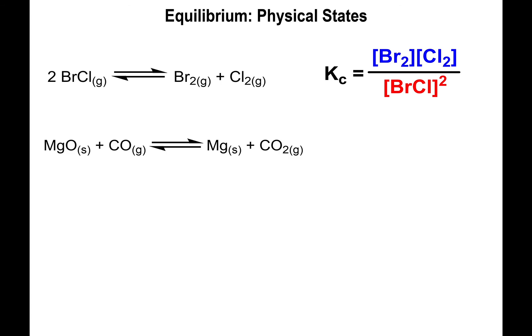Next example: MgO(s) + CO(g) → Mg(s) + CO₂(g). When writing the equilibrium expression for this equation, you must be careful not to include magnesium or magnesium oxide, because they are solids — you do not include solids or liquids in the equilibrium expression.